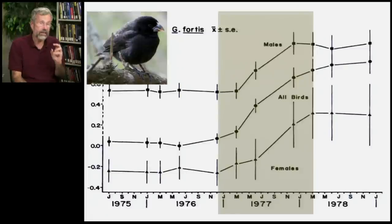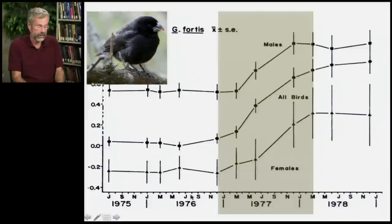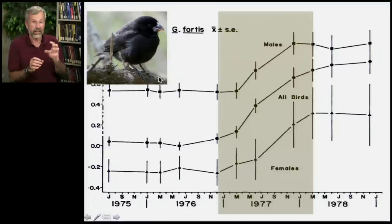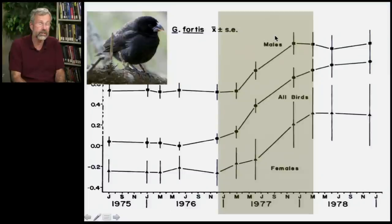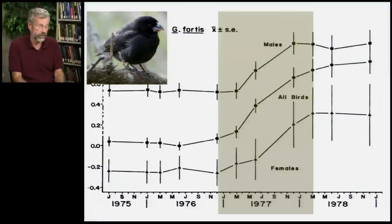We saw that with Geospiza, Darwin's finches in the Galapagos, during the drought. Some individuals were able to still get enough to eat because they could handle those bigger, heavier seeds, and they're the ones that left behind the descendants. So the whole population changed — their descendants had larger beaks than the prior generation.